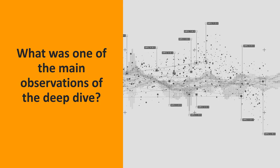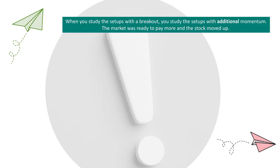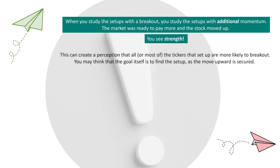Now that some elements about data are covered, here's the next topic: what was one of the main observations of the deep dive? When you study the setups with breakouts, you study the setups with additional momentum — the market was ready to pay more and the stock moved up. When you do the deep dive and look for breakouts in historical charts again and again, you find those breakouts with additional momentum — in a sense, you see strength. This can create a perception that all or most tickers that set up are more likely to break out.